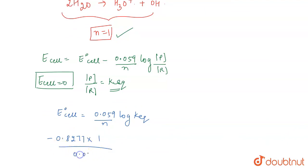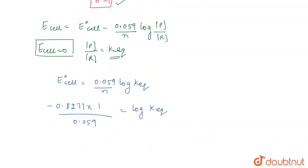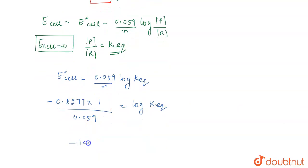So this is going to be nearly equal to -14 equals log of equilibrium constant, which implies that the equilibrium constant will be 10 to the power -14, and this is the correct answer for the question.